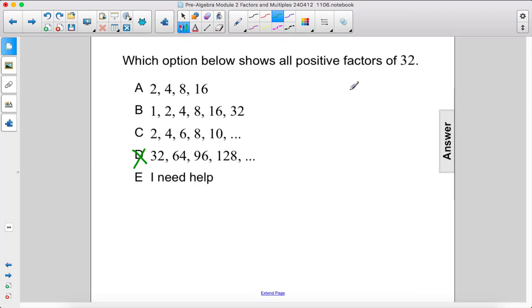So 32, 1 is a factor. 1 goes into 32 thirty-two times exactly. 2 goes into 32, 4 goes into 32, 8 goes in evenly 4 times, 16 goes in twice.